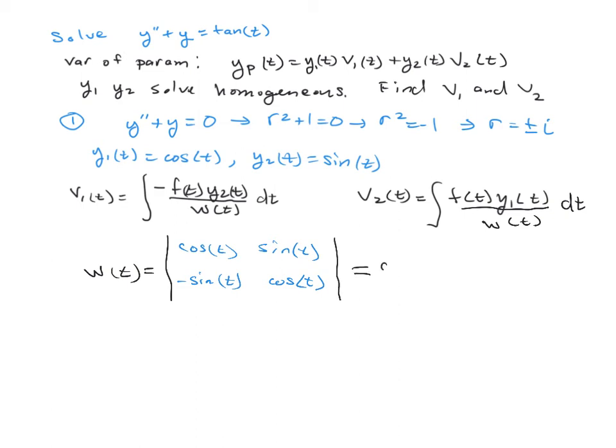That's -sin(t) and cos(t) for the second row. Calculating the determinant: cos(t)·cos(t) - (-sin(t))·sin(t) = cos²(t) + sin²(t) = 1, using the Pythagorean identity. It's important to simplify the Wronskian first, because putting the complicated expression back into your integrals would make a big mess.